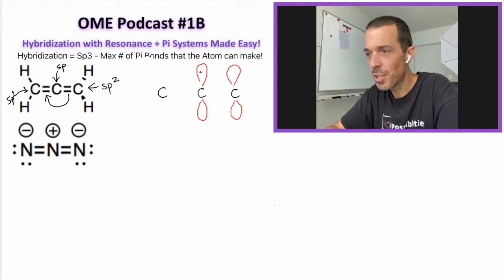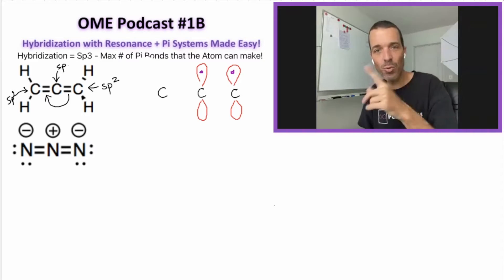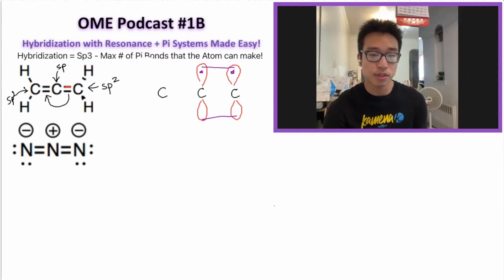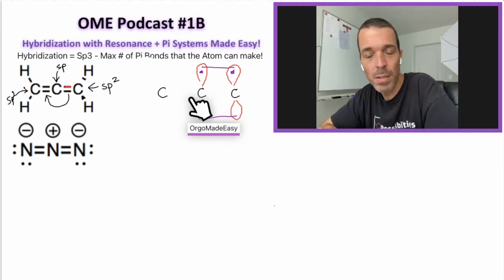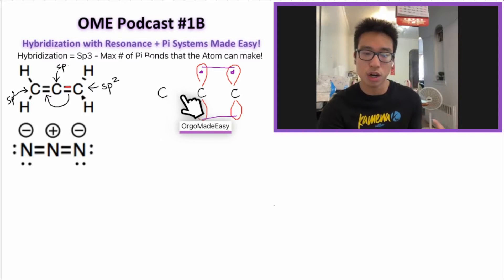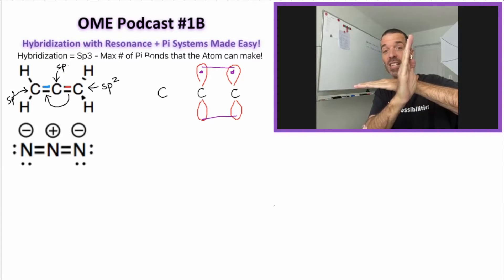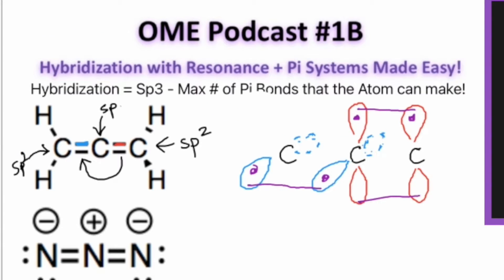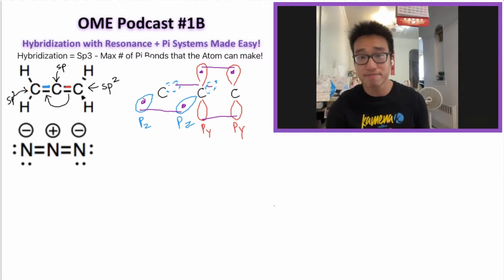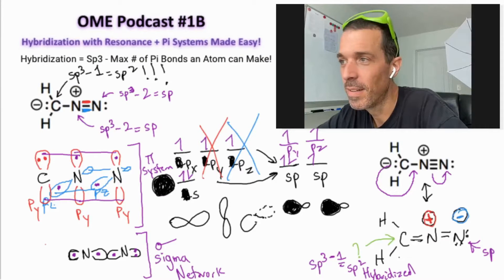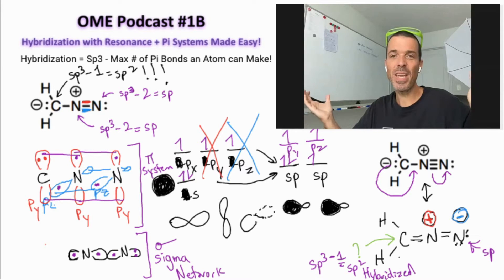Now let's skadoosh the purple electrons into those py orbitals — perfect. Next we need pz orbitals. Why can't we just do py again? Because with two electrons there already, we can't fit another orbital in the same place. We go 90 degrees to make sure all the electrons are happy. Label the orbitals — there's your alien! At this point you can handle the pi network combined with the sigma network.